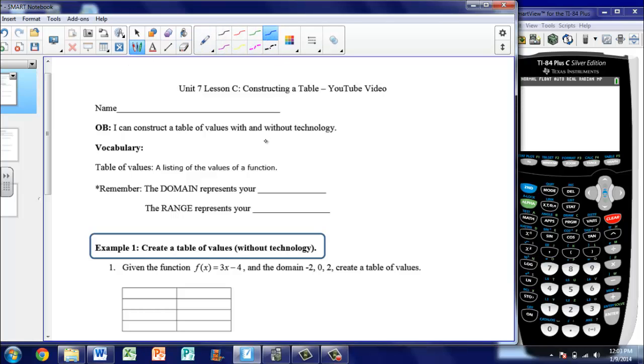Good evening, students. Today we're going to take a look at Unit 7, Lesson C, Constructing a Table. The objective: at the end of this section you should be able to say, I can construct a table of values with and without technology.